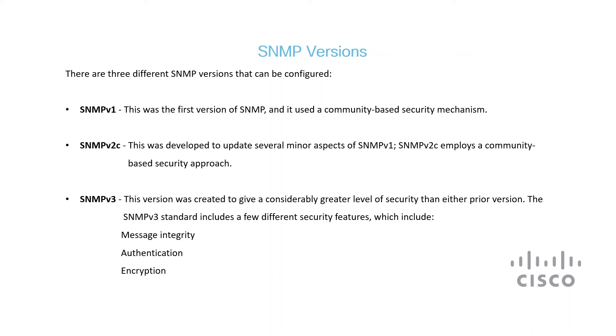SNMP has evolved over time to meet the security and functionality needs of modern networks. There are three main versions. The original SNMP v1 has a straightforward security system. SNMP v2c, or version 2 community-based, came along to refine the original but didn't change the security much. SNMP v3 was a game-changer, introducing robust security measures such as message integrity, authentication, and encryption, offering a more secure way to manage and monitor network operations. Although considered the latest and greatest, version 3 may not be the best fit for all — if a network is older or near capacity, the additional security measures can cause delays.